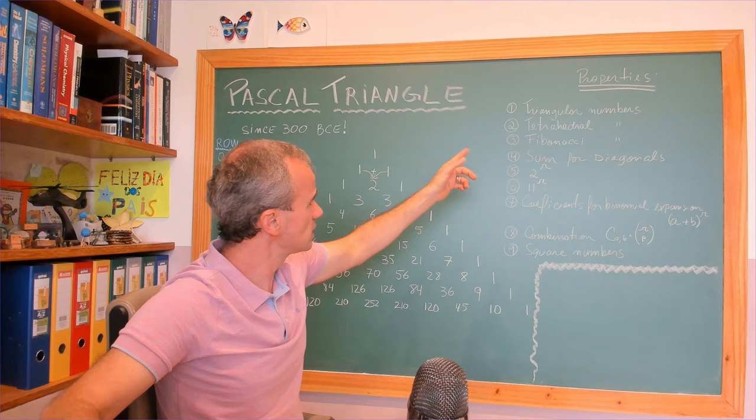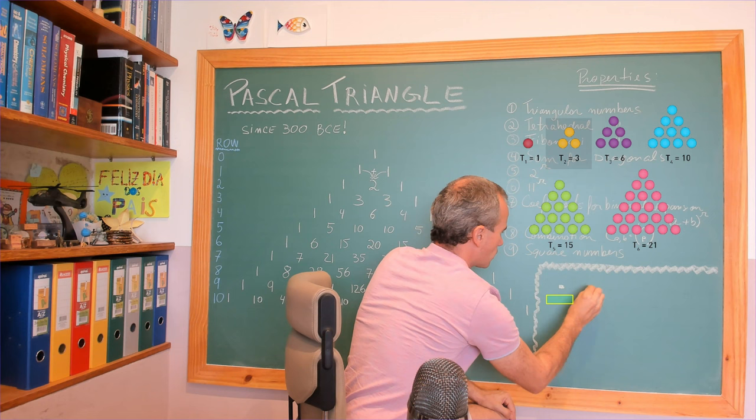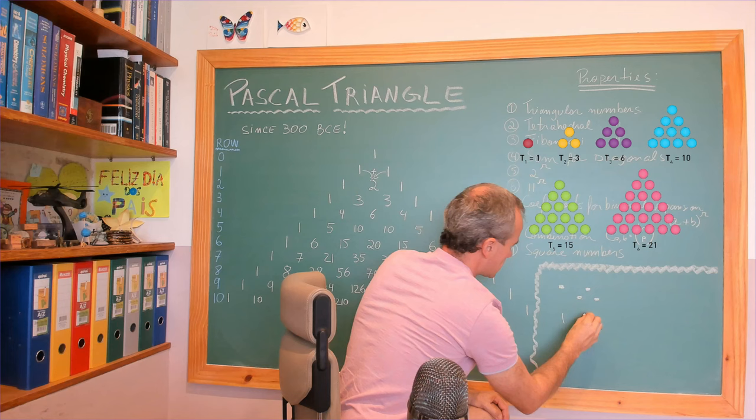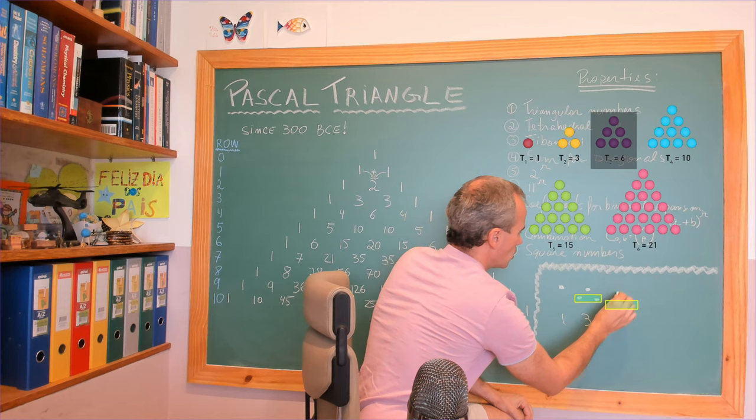Now let's see the triangle numbers. Triangle numbers are these. We start with a dot. Then the next one, we're going to put a base below it, trying to form a triangle. So it's going to be three. The first number is one, the second on the sequence is three. Now we're going to put an even lower base. If this base is with two, the next one is going to be with three.